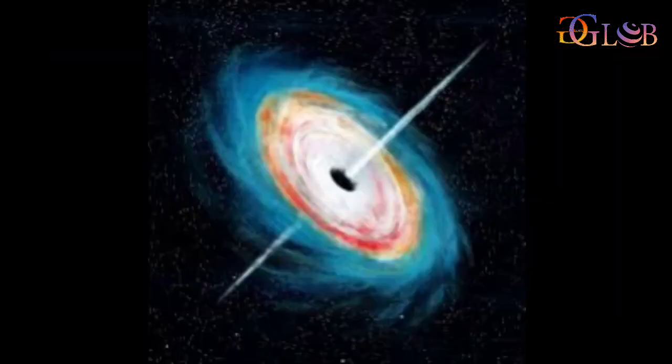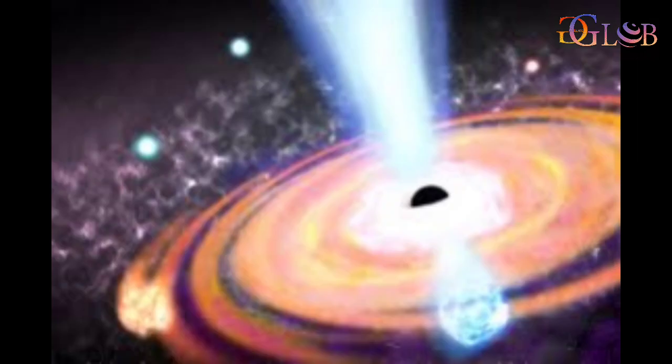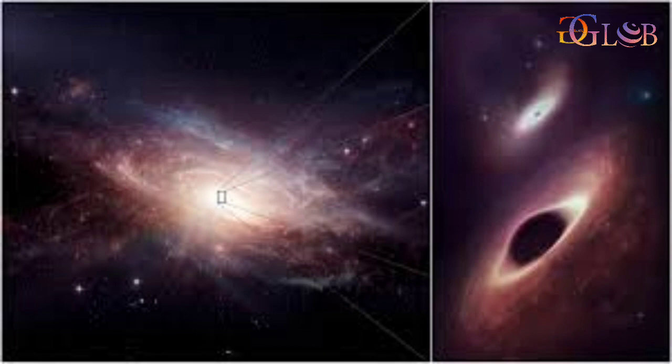Silk's team predicts the young universe had two phases. During the first phase, high-speed outflows from black holes accelerated star formation, and then in a second phase, the outflows slowed down.